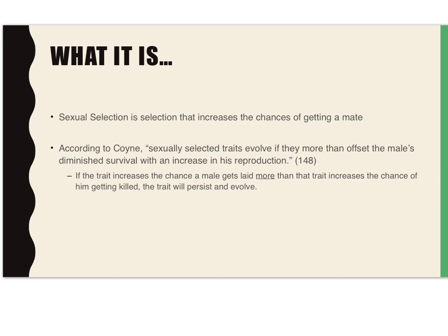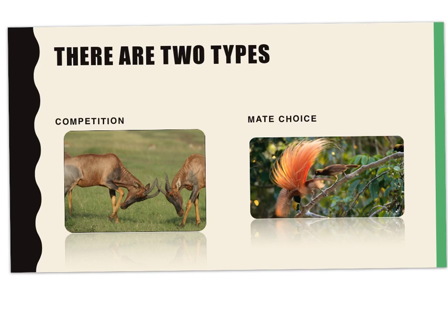Sexual selection is selection that increases the chances of getting a mate. In simpler terms, if a trait increases the chances of a male mating more than it increases the chances of him getting killed, that trait will persist and evolve. There are two types of sexual selection commonly found in nature: competition and mate choice.